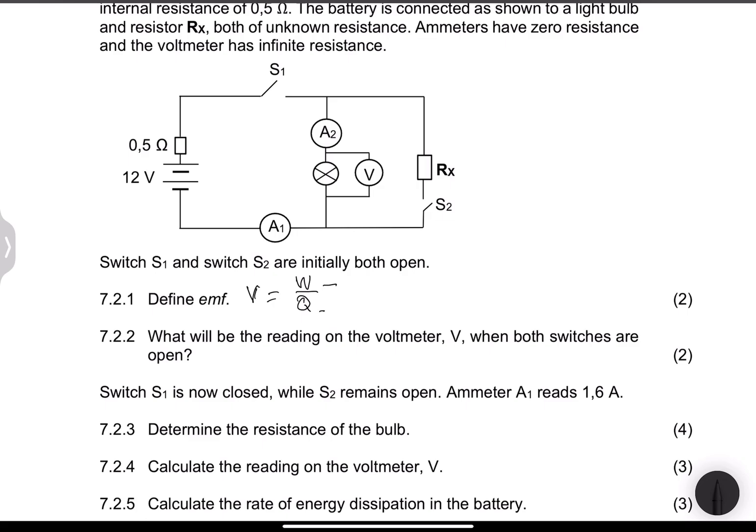So they say: what will be the reading on voltmeter V when both switches are open? Well, in that case, the reading on V will actually be zero volts. The reason for that is that the voltmeter V is essentially reading the voltage across the bulb, and because there's no current flowing, there'll be no difference in the potential across that bulb.